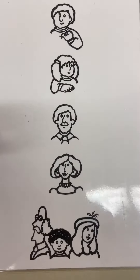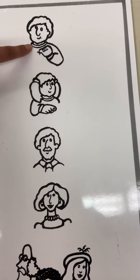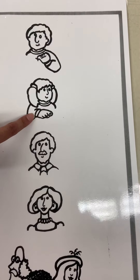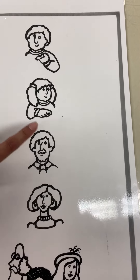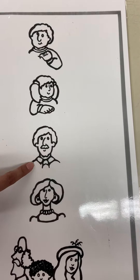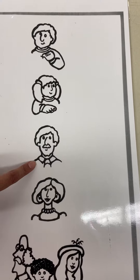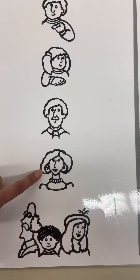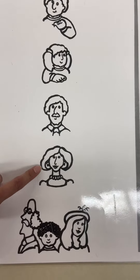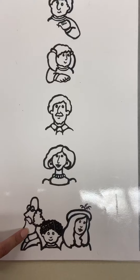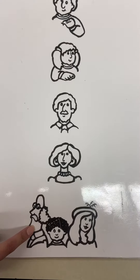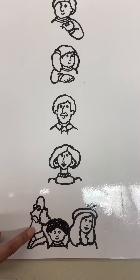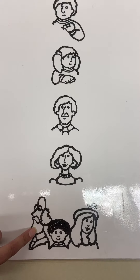Let's do that one more time. I. Point to someone — you. Point to a boy — he. Point to a girl — she. Point to a group you are in — we. Point to a group you are not in — they.